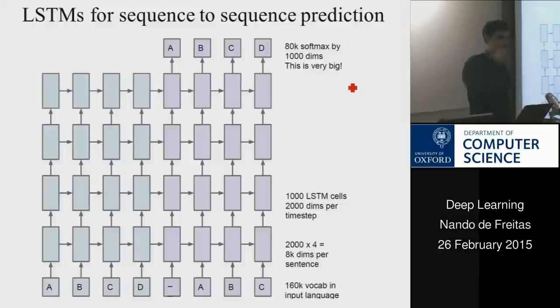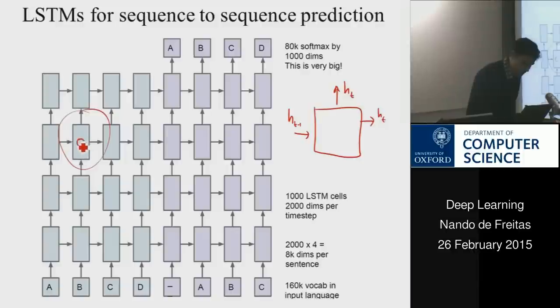and then you learn all the parameters by doing back propagation on this LSTM, and voila, you get a translation model. And if you add more layers, you just add more layers. And so here, if we pick one of these guys,